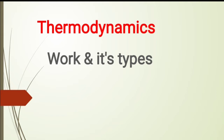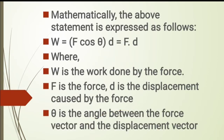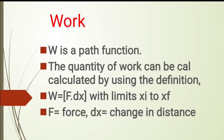Energy can only be converted from one form to another. After that we have seen the various types of processes — isothermal process, isochoric process, isobaric process and so on. Then we started with work, where work W is equal to F·dx. F represents the force and dx represents the displacement. When we apply one Newton of force and the object moves one meter, that is one Joule — the unit of work.